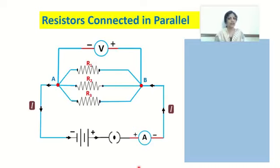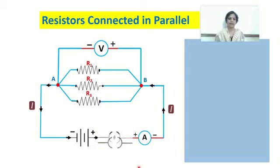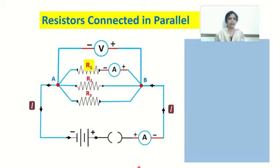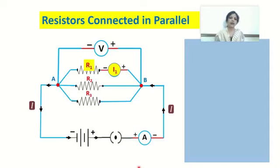We need to find out how much is the current through resistors R1, R2, and R3 — is it equal to the total current or different? We take out the key, then connect an ammeter in series with resistor R1. We plug in the key and observe the reading of the ammeter in series with R1. Let's assume the current flowing through R1 is I1, and the total current of the circuit is I.